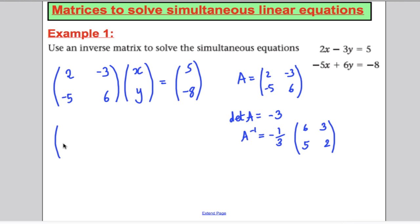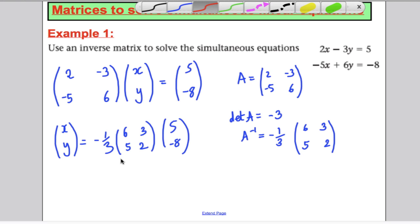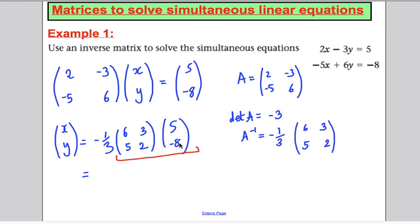Therefore [x; y] is found by multiplying both sides in front by the inverse. The inverse times A gives the identity, so [x; y] equals negative one-third times [6, 3; 5, 2] times [5; -8]. Multiplying out: 6 times 5 plus 3 times negative 8 is 30 minus 24, giving 6. And 5 times 5 plus 2 times negative 8 is 25 minus 16, giving 9. Multiplying by negative one-third gives negative 2 and negative 3. So x equals negative 2 and y equals negative 3.